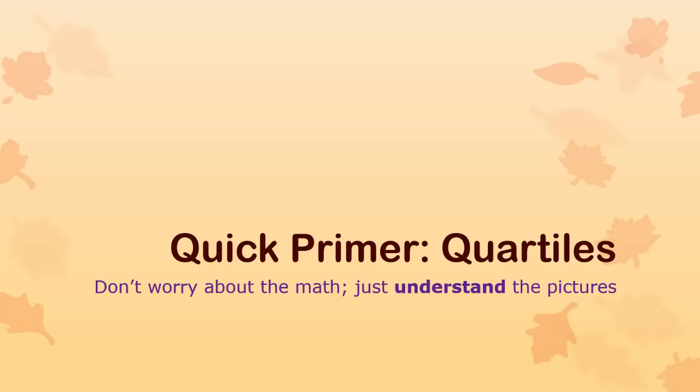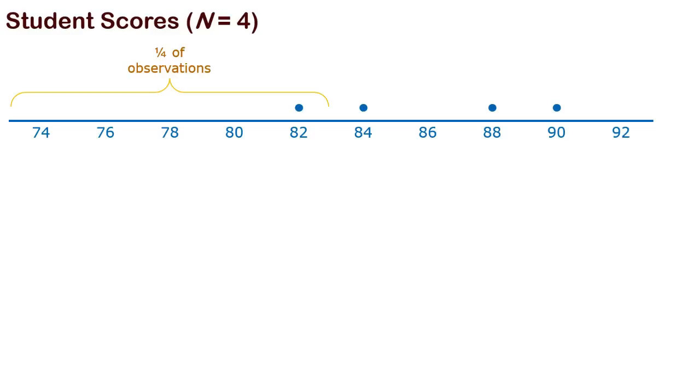So let's do a little quick rundown of what quartiles are. I don't need you to know how to calculate them, but you should understand what they are. So let's say you have an extremely simple example. You have four students in your class, and these are their scores on a test. One got 82%, one got 84%, another got 88%, another got 90%. See if you can figure out where the quartiles might be. Basically, just dividing things up super evenly. One quarter of observations are in this range. In other words, one observation. There's only four, so one quarter of them is just one. Another quarter of them are here, another quarter of them are here, another quarter of them are here.